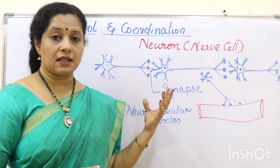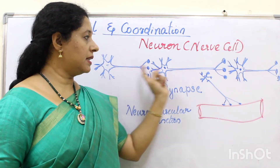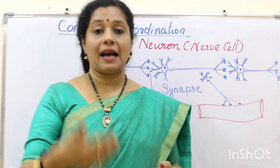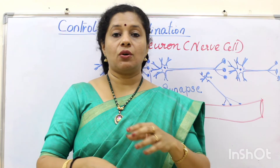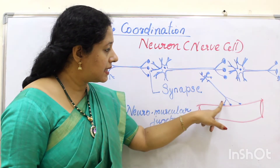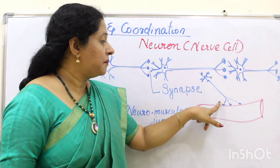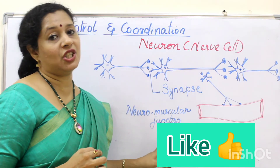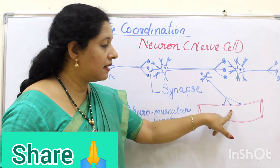Once the message travels through neurons and finally reaches the brain, the brain gives a command to make the necessary action. For that action, muscle movement is required, so the message from the brain must travel back to the muscle via electrochemical signals. The part where a neuron meets a skeletal muscle is called the neuromuscular junction, otherwise known as the motor end plate, so that the signal can go into the muscle.